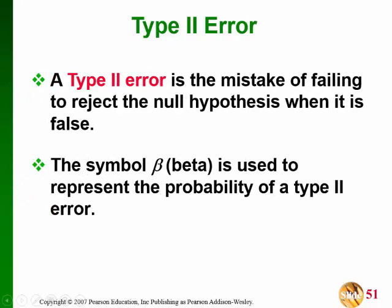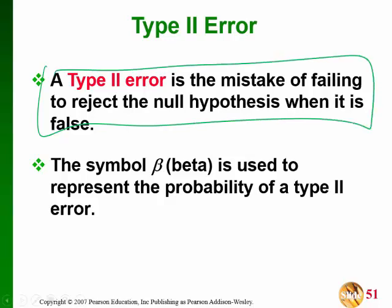A Type II error is when we don't reject the null hypothesis but it was actually false. This error can be quantified using another Greek letter, beta, but the actual calculation of beta is more complicated than we need here. It's important to be able to identify what your Type I and Type II errors are.